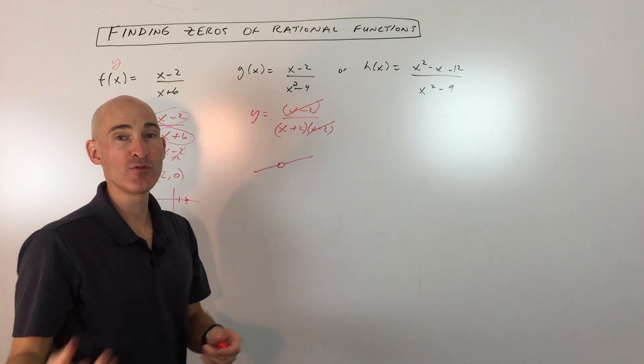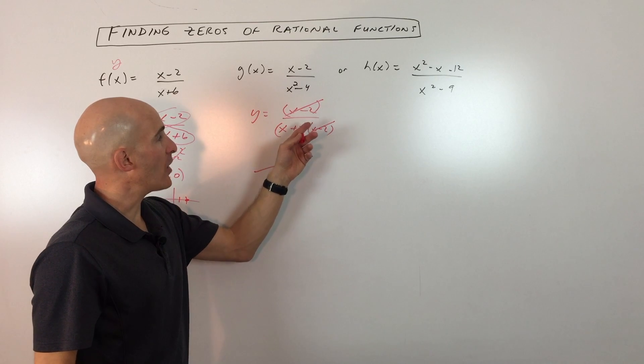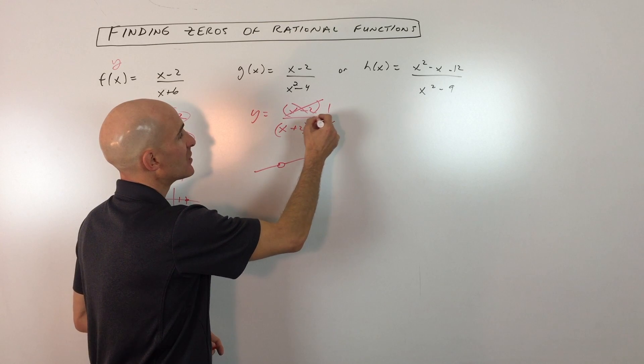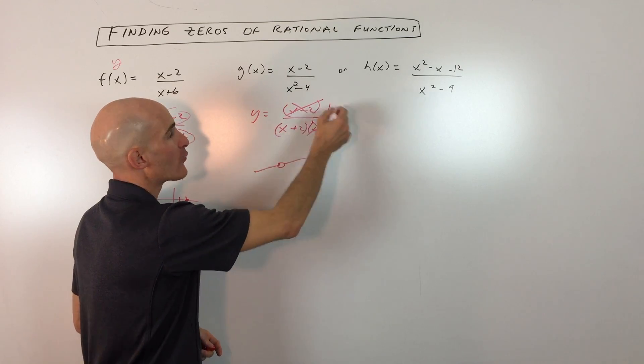a hole in the graph, or what they call a removable discontinuity. For all practical purposes, these factors cancel one another out, and your basic equation now looks like 1 over x plus 2.